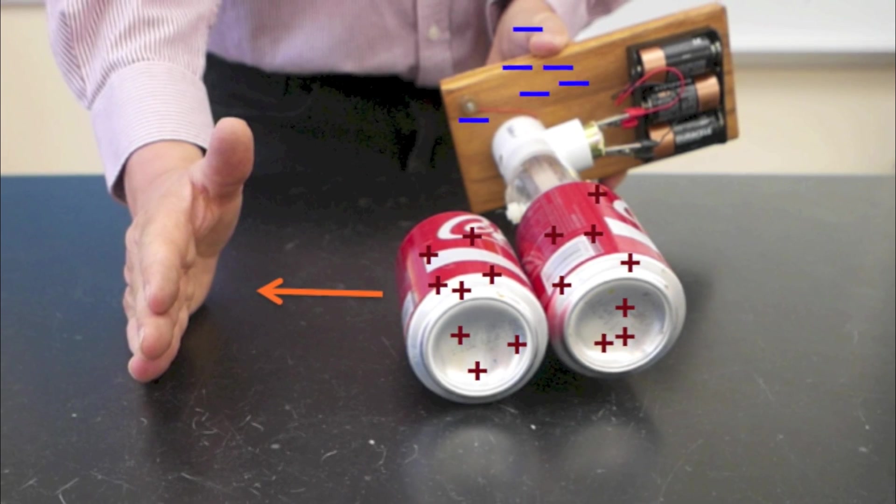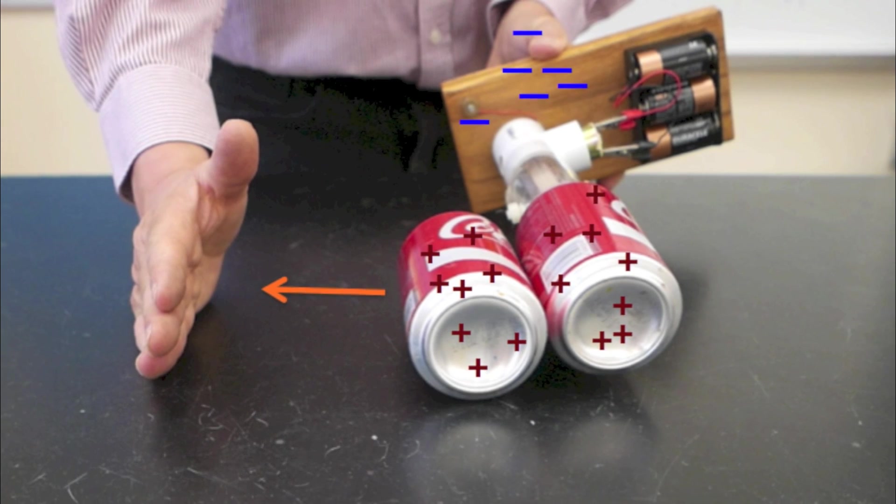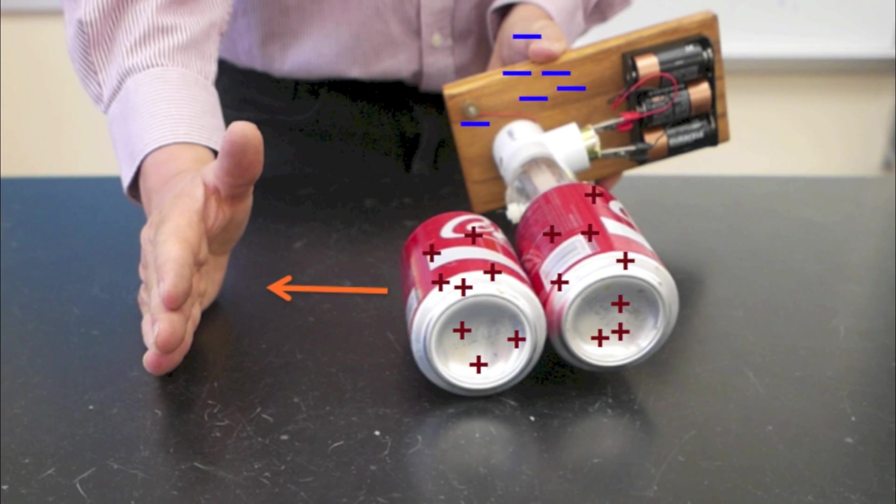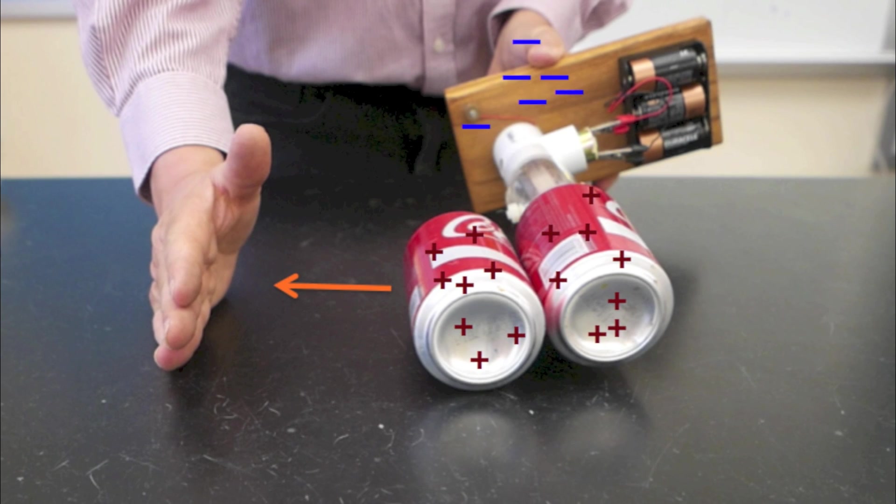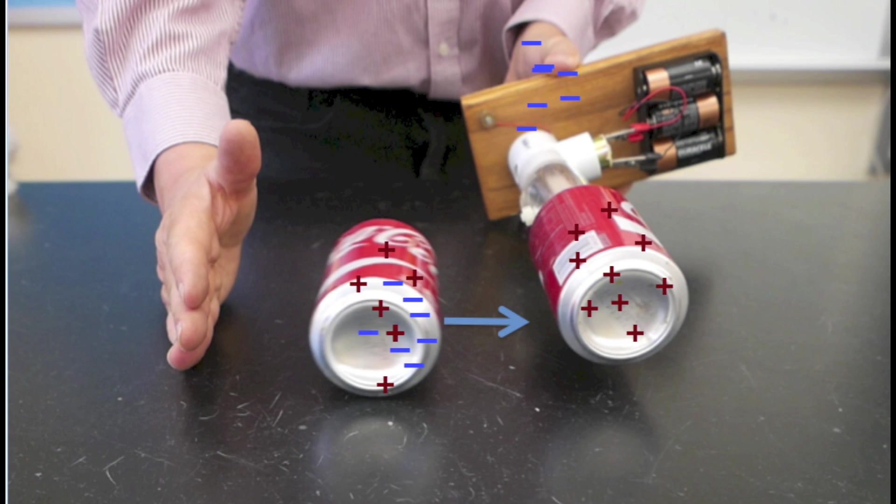the can gives up its electrons and becomes positively charged. It's then attracted to the electrons in my hand. When it touches my hand it will gain electrons, become neutral, and is once again attracted to the generator.